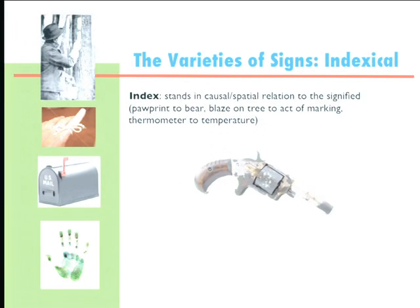The blaze on a tree, I mentioned the mailbox flag. The paint mark of a hand or fingerprint is obviously caused by — if it uses a sign — it's caused by the presence of the hand. The notches on a gun, if people still do that, each corresponding to the number of people killed with that gun.